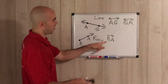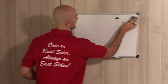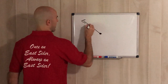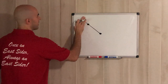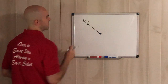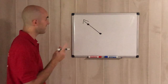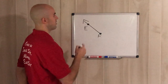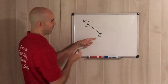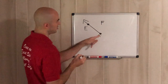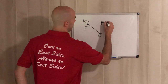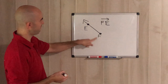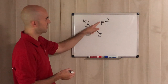Always follow the starting point — it doesn't matter which direction the ray is drawn. If we have a ray with points E and F where F is the starting point, we know we have to start with F. We label it ray FE because F is the starting point and it goes toward E. Always remember: with a ray, you always start with the starting point.